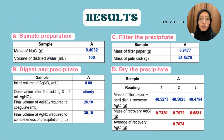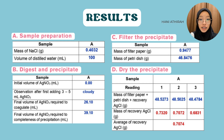The mass recorded is used to calculate the Cl content in the sample. Results for determination of chloride content in sodium chloride salt consist of 4 parts: A, B, C, and D. Part A is sample preparation, showing the mass of sodium chloride and volume of distilled water. Part B is digestion and precipitation, showing volume of silver nitrate used. Part C is filter the precipitate, showing mass of filter paper and petri dish. Part D is dry the precipitate, showing mass of recovered silver chloride.